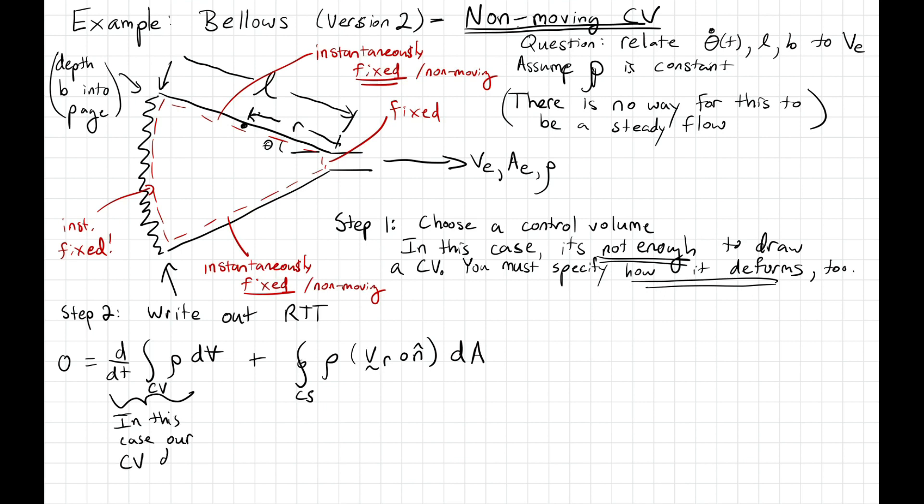Now note that in this case, remember that integral is over the control volume, and in this case our control volume does not move. In that case, the first integral is zero, which is different than how we solved it the first time.